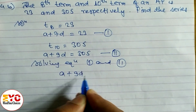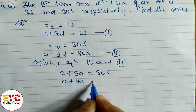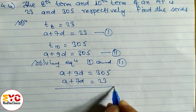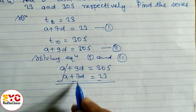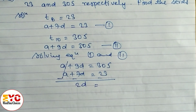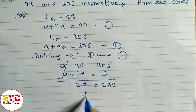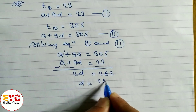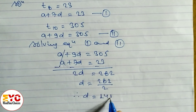Subtracting equation 1 from equation 2 using the elimination method: a plus 9d equals 305, minus a plus 7d equals 23. This cancels a and gives 2d equals 282, so d equals 282 divided by 2, therefore d equals 141.